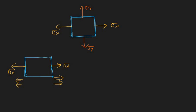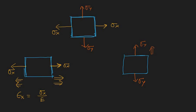The strain epsilon_x is simply stress divided by modulus of elasticity, that is sigma_x by E. For case two, we have sigma_y applied. Due to sigma_y we have a strain in the y-direction, so epsilon_y is simply sigma_y divided by modulus of elasticity.